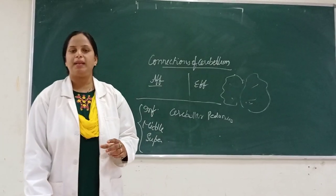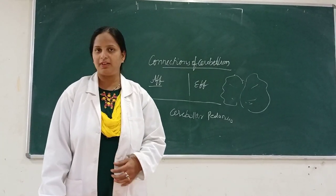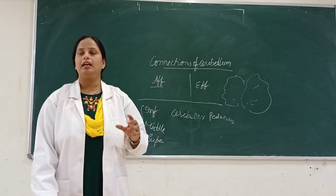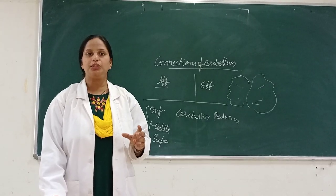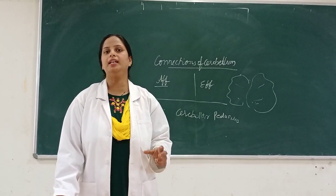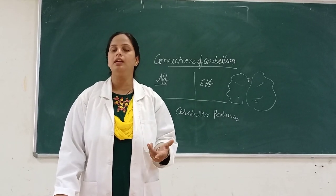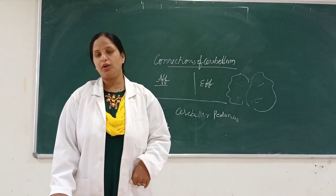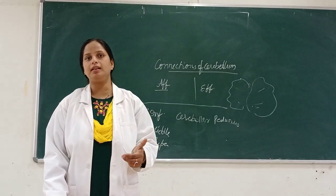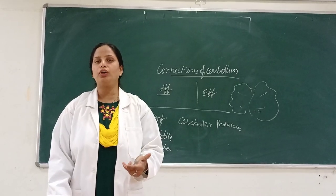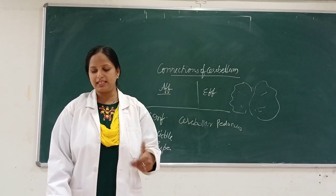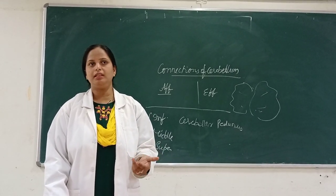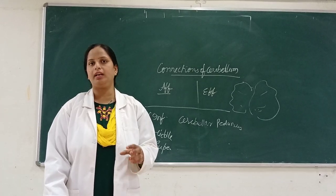The cerebellum also plays an important role in control of equilibrium via the vestibular apparatus. In case of linear acceleration, the utricle and saccule are activated; in case of angular acceleration, the semicircular canals send information to the vestibular nucleus, and from there information is sent to the flocculonodular lobe of the cerebellum. The cerebellum inhibits contraction of antagonistic muscles, thus playing an important role in maintaining posture and equilibrium.